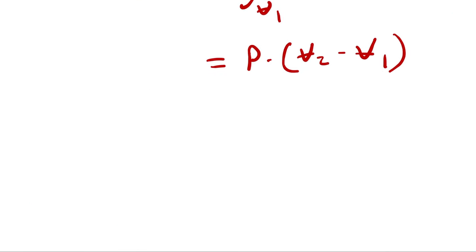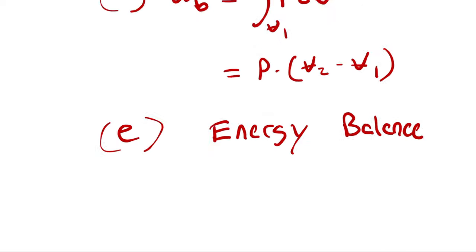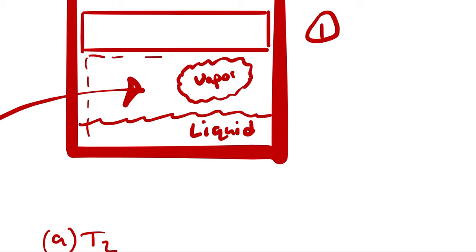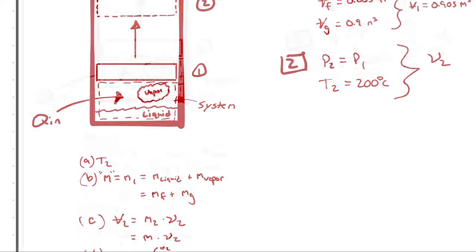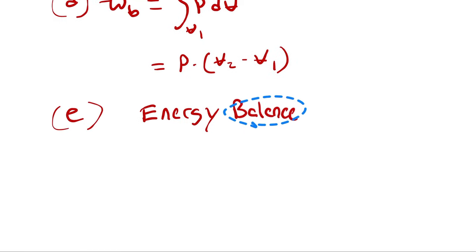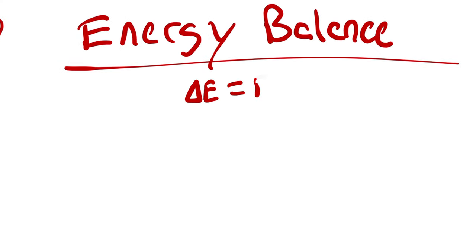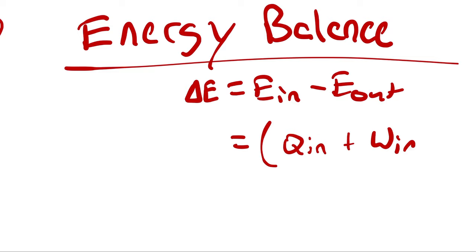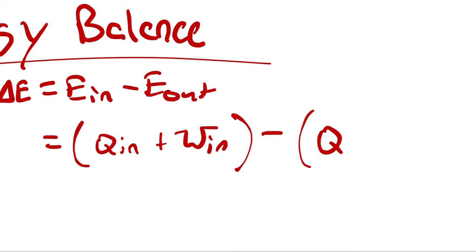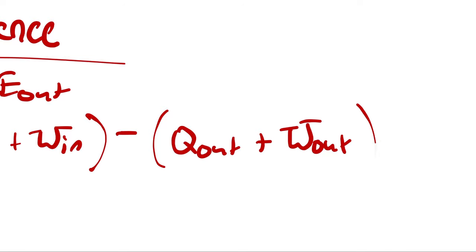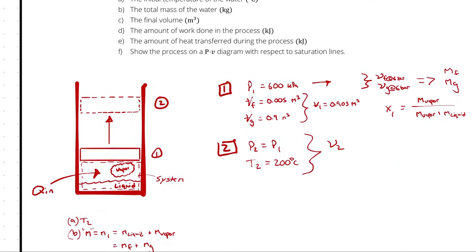For part E, I need to relate work to heat transfer and energy changes via an energy balance. I define our system as the mass of water — both vapor and liquid — which is a control mass (closed system). The energy balance starts with delta E equals energy in minus energy out. For a closed system, energy in could be Q-in and work-in; energy out could be Q-out plus work-out.